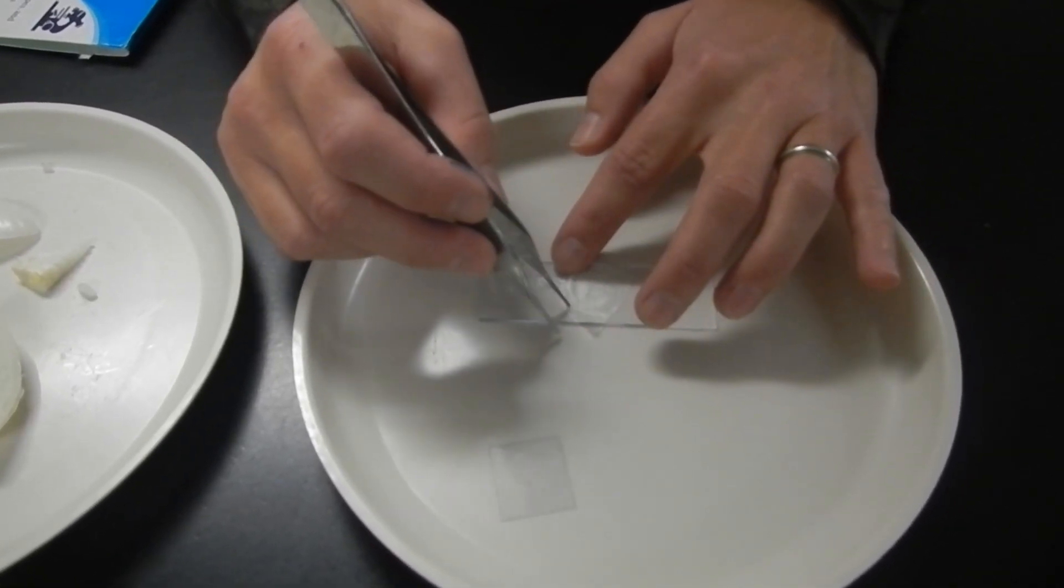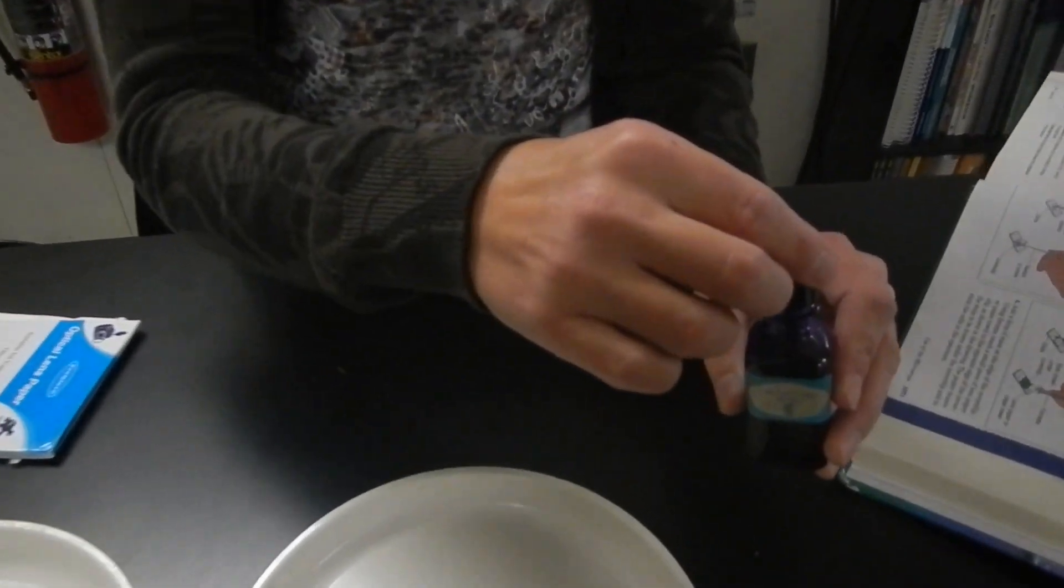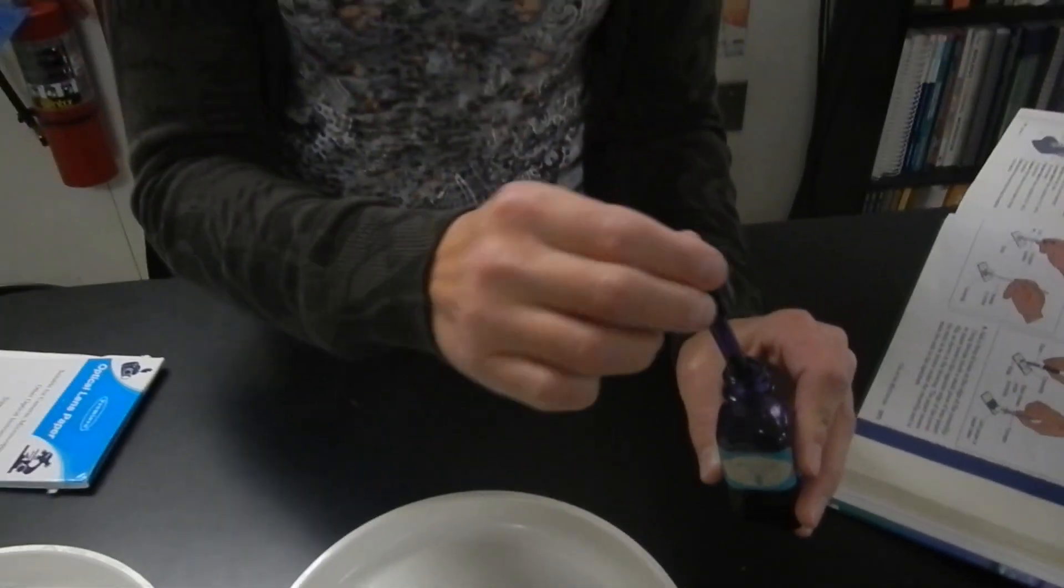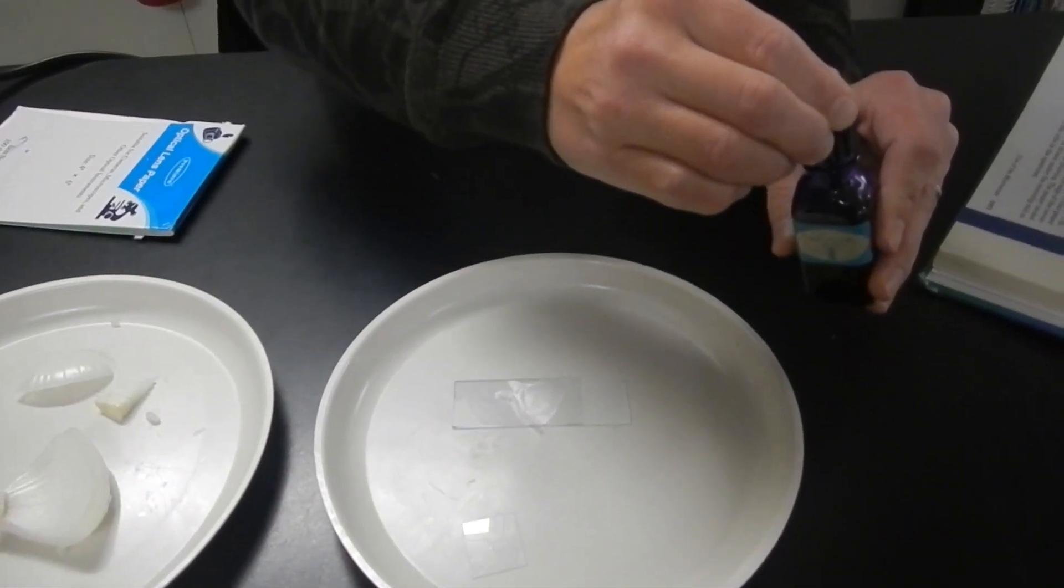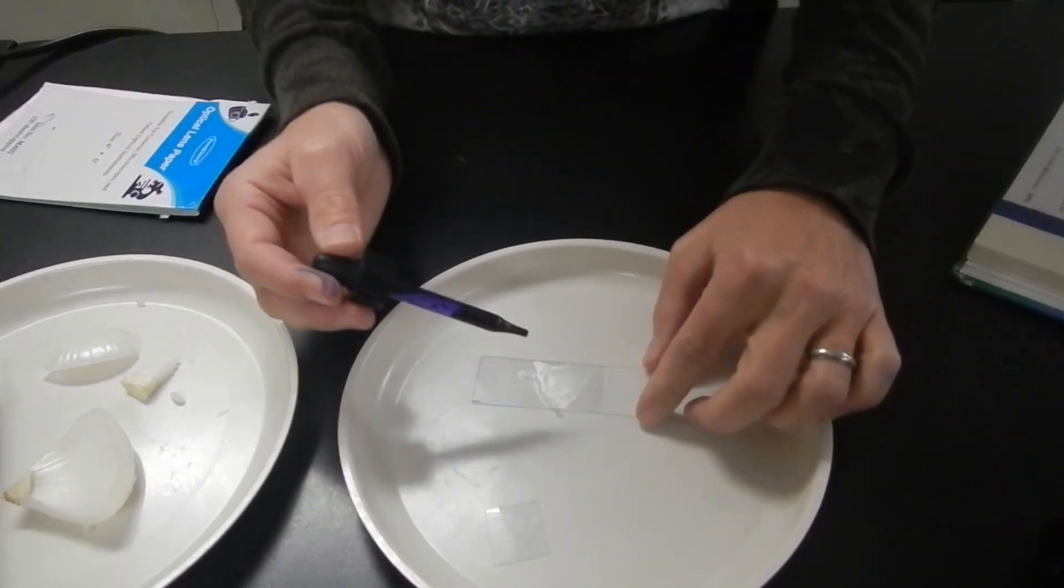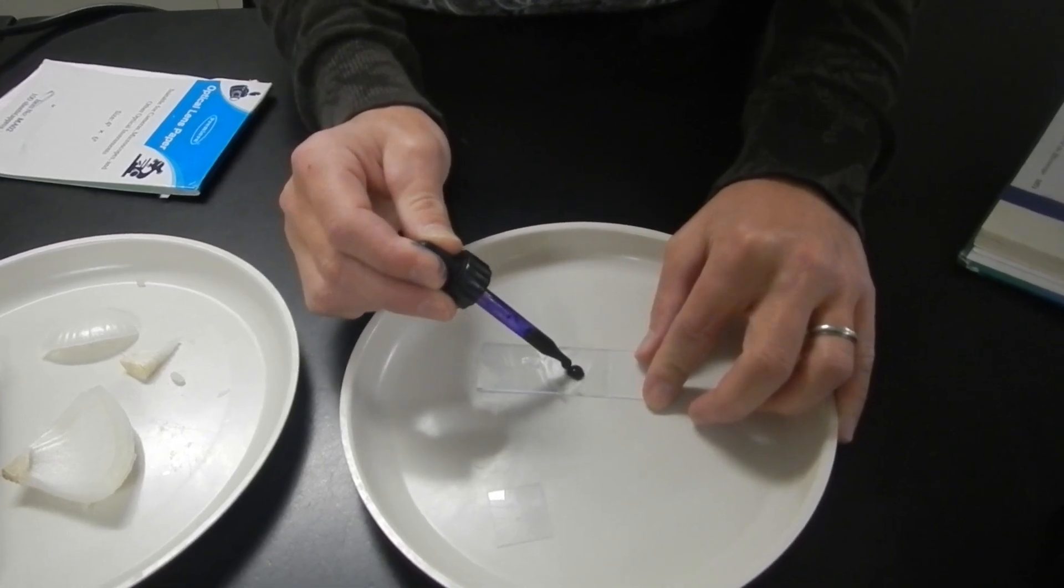Alright, our next step after we get our specimen placed on the slide is to add a couple of drops of stain. The stain that I'm using today is called methylene blue and what it's going to do is it's going to stain all the organelles in the onion skin here. I'm going to place a couple of drops onto my onion skin.